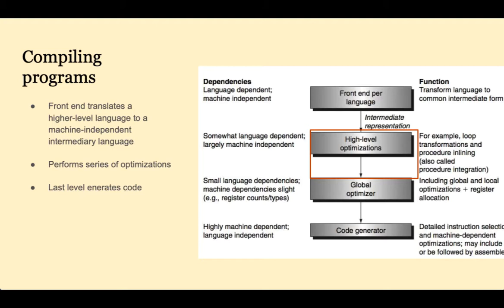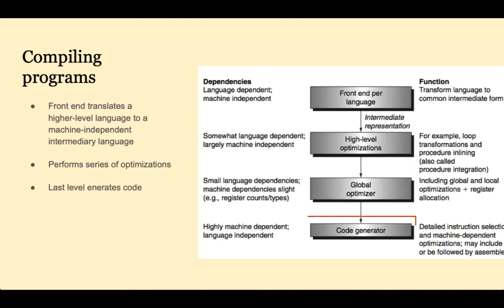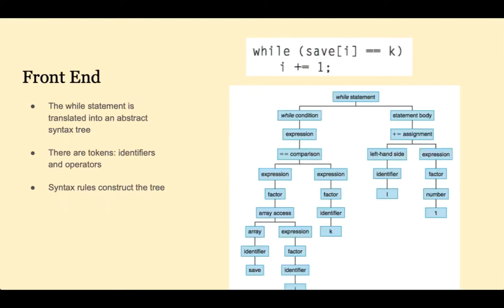The front end will be unique for every language — for example, the front end for C will be different than the front end for C++. After the intermediate representation is created, the code goes through several layers of optimizations. The last stage will generate the machine code, or in some cases the assembly code. Let's look at what it takes to convert a simple while loop in a higher-level language to the intermediate code.